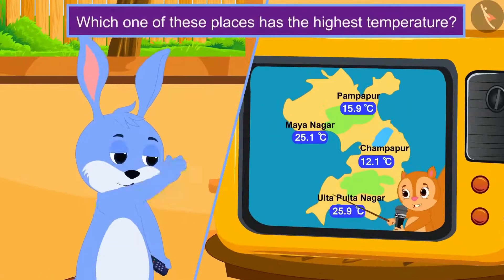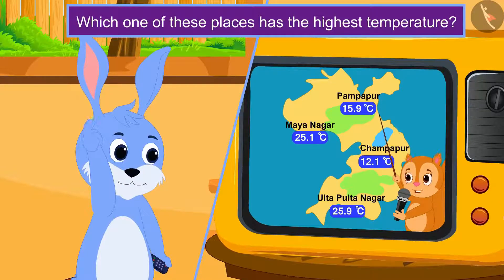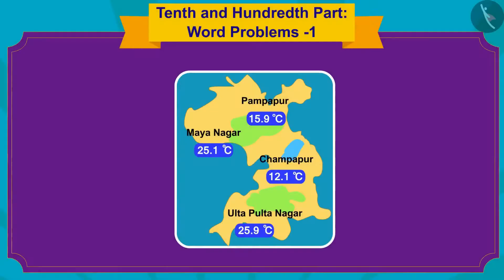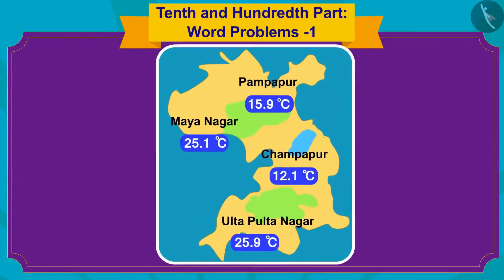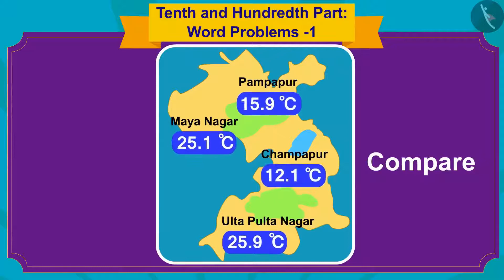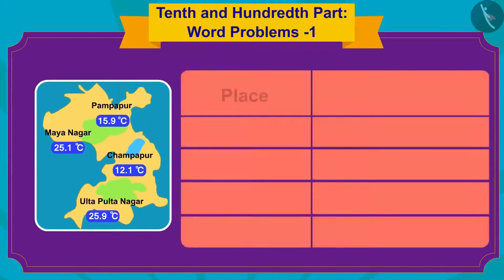Which one of these places has the highest temperature? Bunny started thinking. Children, let us help Bunny. To find the place with the highest temperature, we have to compare the temperature in degrees Celsius shown for these places. Let us look at an easy process to do this.